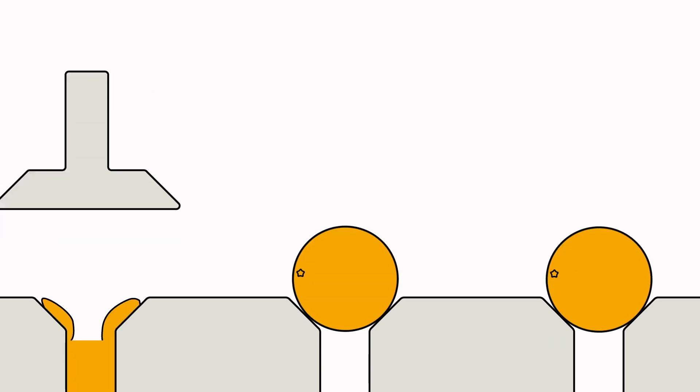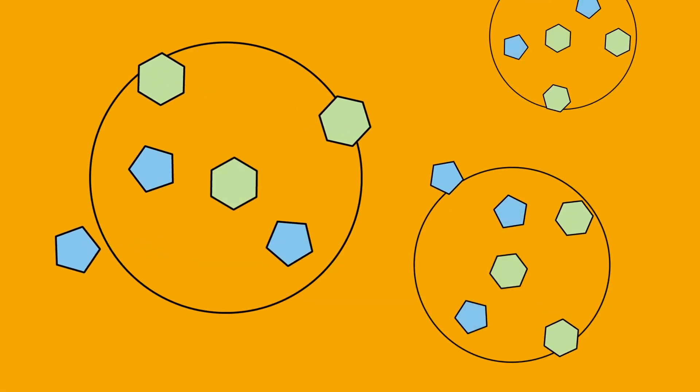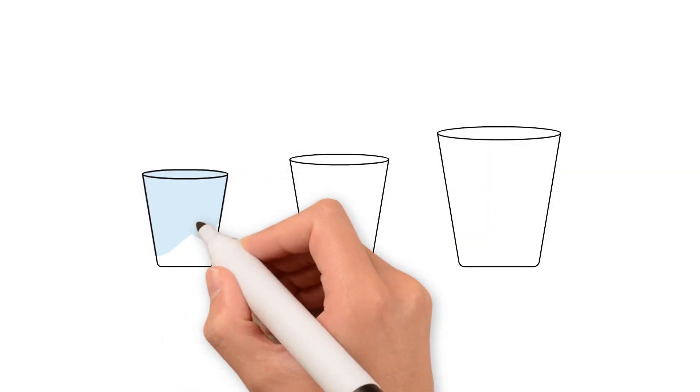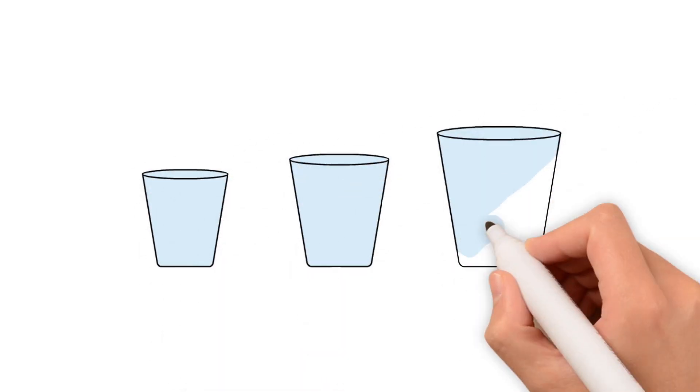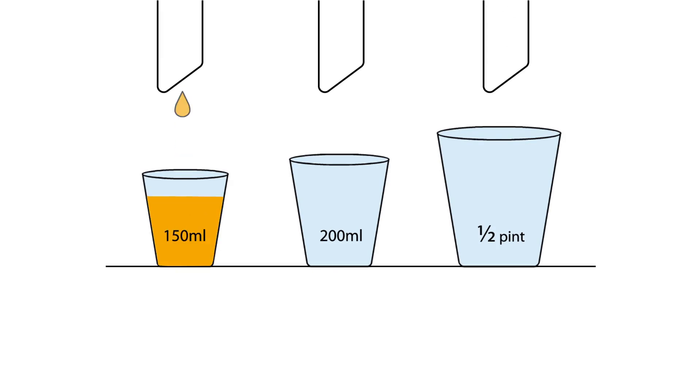But when fruit is turned into fruit juice, the sugars come out of their cells and become free sugars. The fiber is lost, and it's easier to consume extra sugar without realizing. You wouldn't eat four oranges in a row, but you might drink their juice in one glass of orange juice without feeling full.